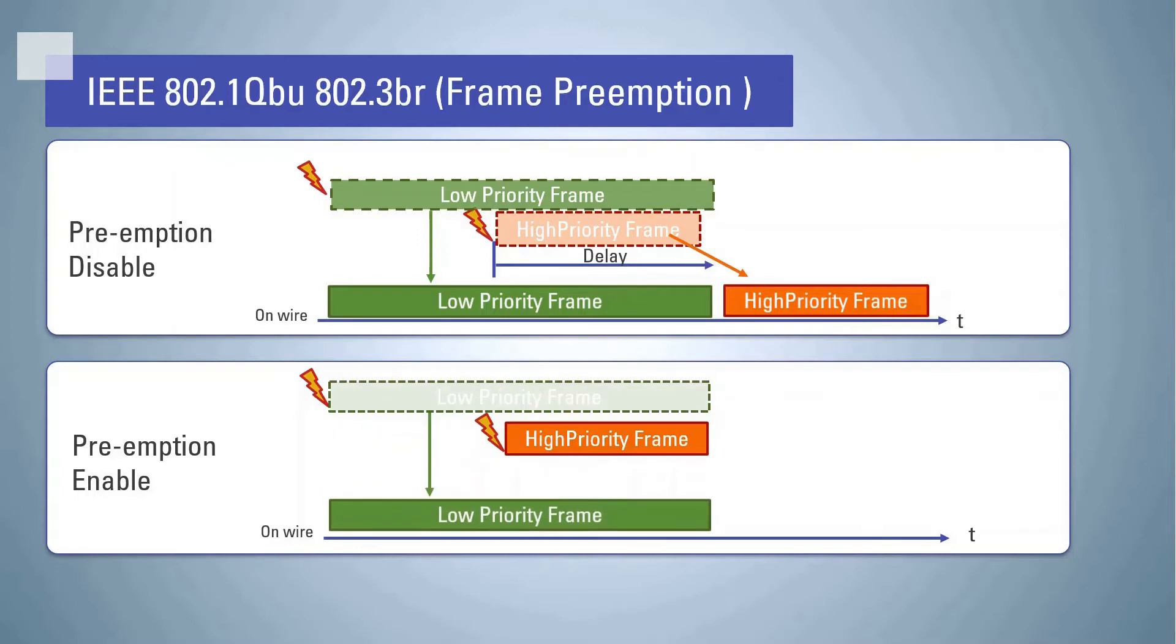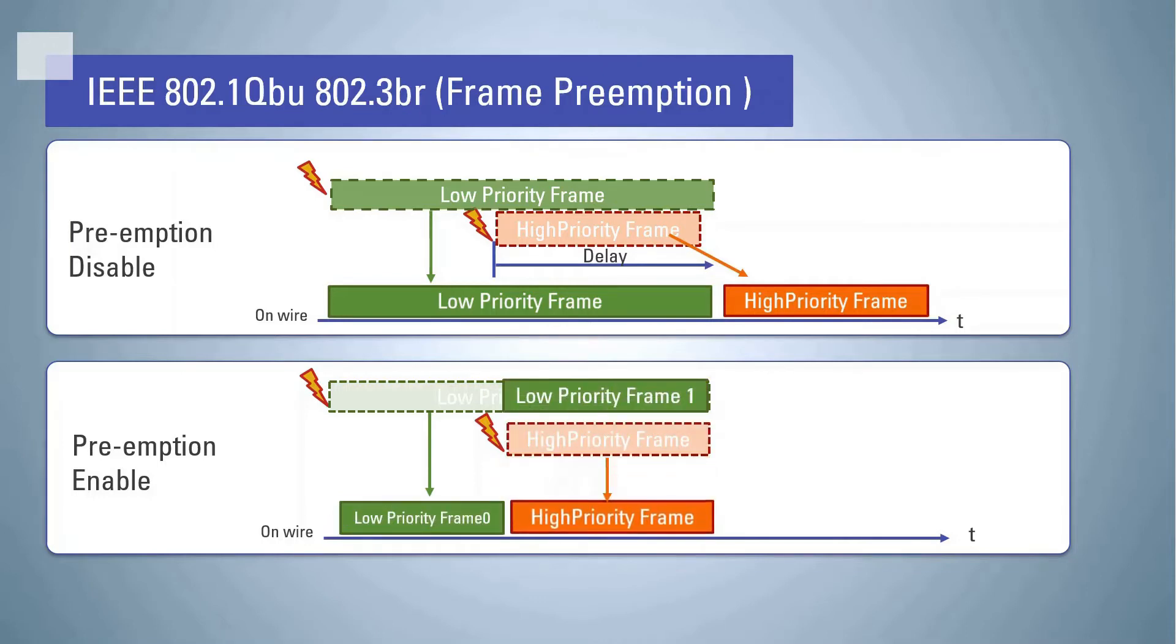However, in the case of preemption-enabled Ethernet devices, it is possible to interrupt low-priority frames with high-priority frames. The low-priority frame is a special frame called P-frame. The high-priority frame can be transmitted without delay, so real-time processing is possible.